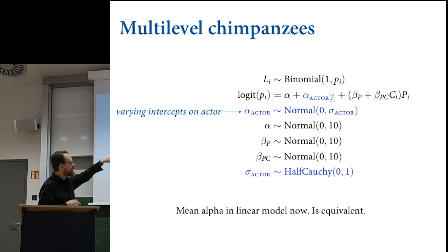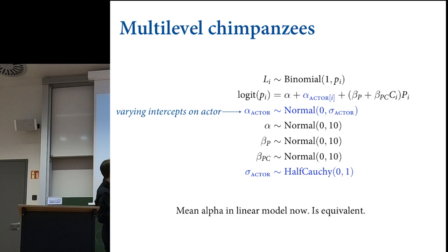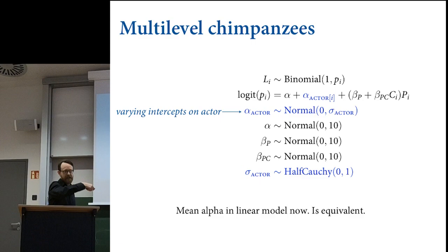This is the same varying intercepts model—exactly the same. You'll often see it specified this way. Packages like LME4 specify the model this way: the varying effects will typically be offsets from some grand mean, so they'll be zero-centered. The alpha sub-actors are now offsets from the mean of the linear model from alpha. To get them on the scale of the tadpole model, you just add alpha to each.